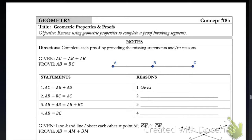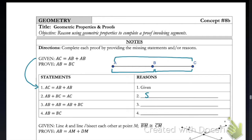Our given information is that the measure of segment AC is equal to the length AB plus AB, and we're trying to prove that the two lengths AB and BC are equal to each other. These are all on the same segment AC in our picture. I'm going to write down our given information first. Then line two says that AB plus BC equals AC. If I mark that in my picture, AB and BC together make up the entire segment AC. Since those two segments together equal the larger one, that is a great example of our segment addition postulate.